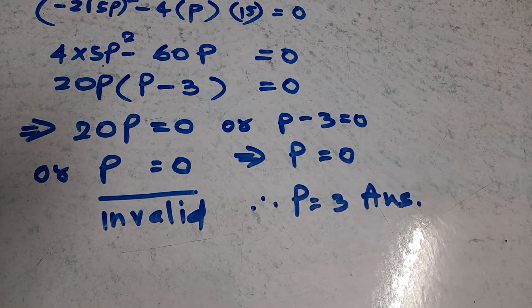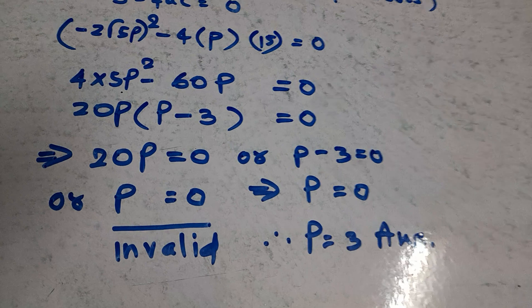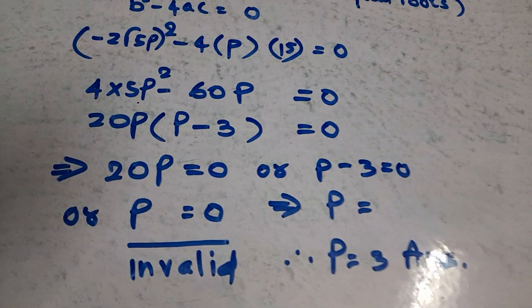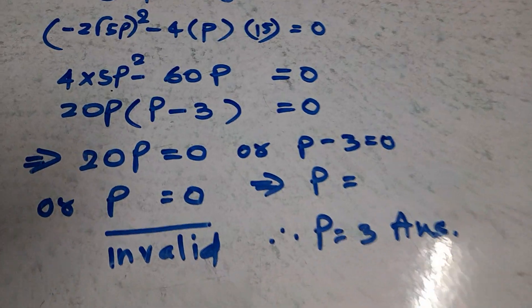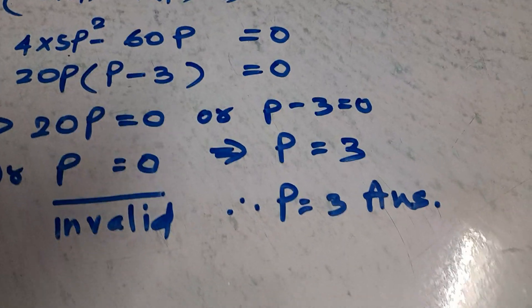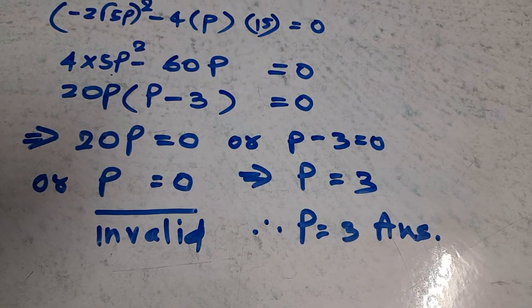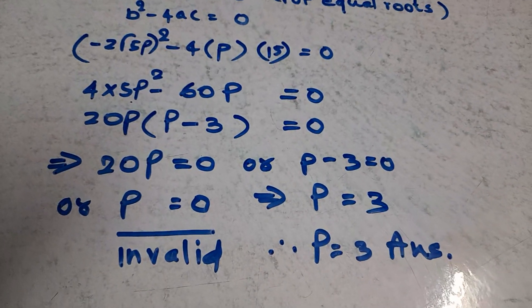So p minus 3 equals 0, which gives p equals 3. The answer is p equals 3.